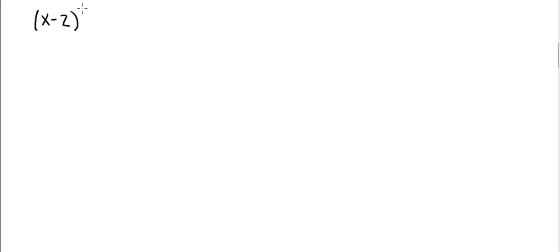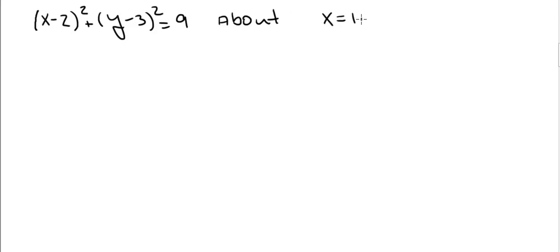In an earlier video we showed that the volume of a torus obtained by rotating a region bounded by the circle x minus 2 squared plus y minus 3 squared equals 9 about the line x equal to 10. That volume was 144 pi squared. We used the washer method to do it. This time we are going to use the shell method to show the same result.